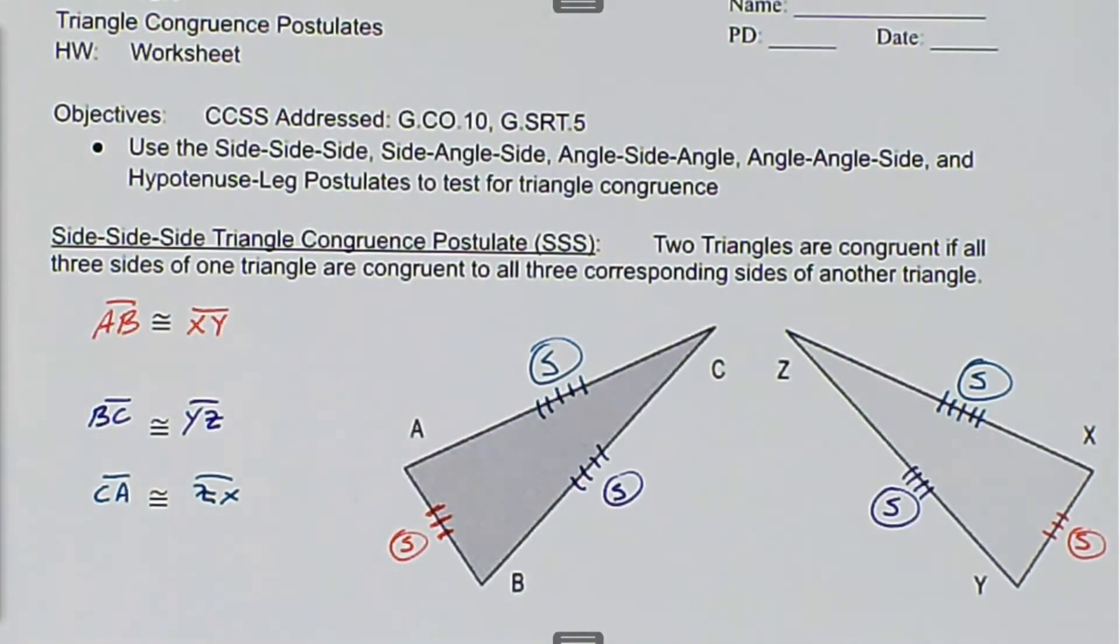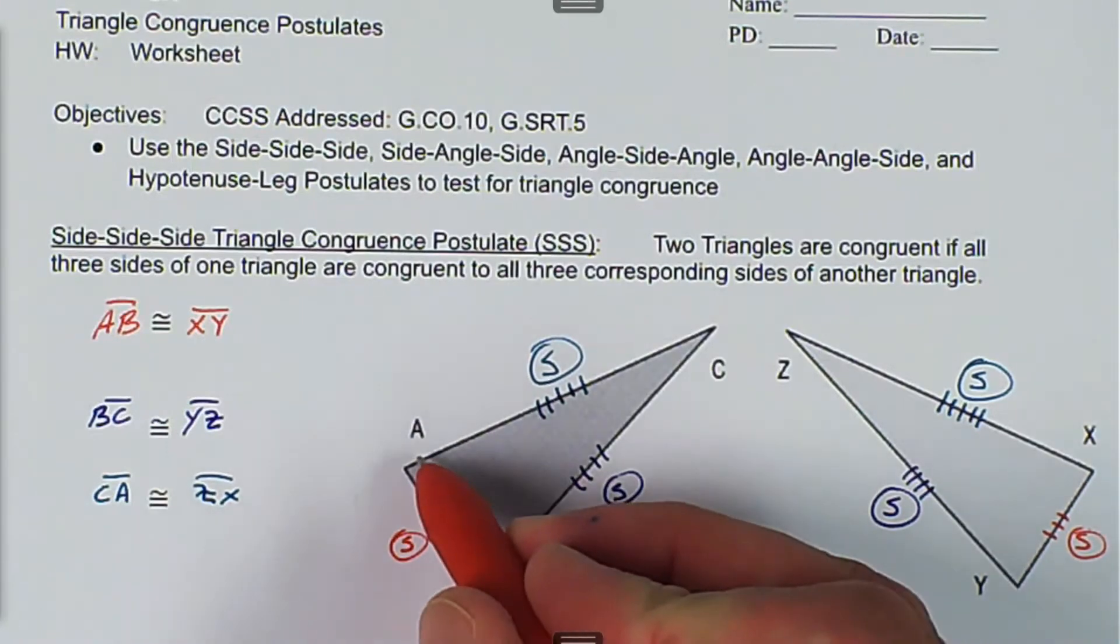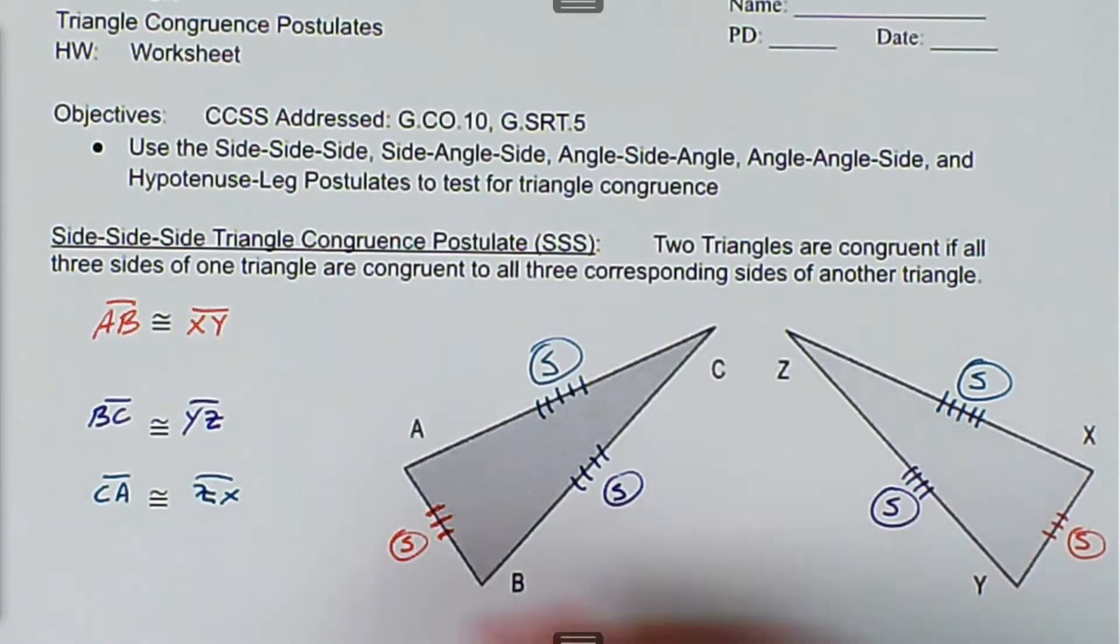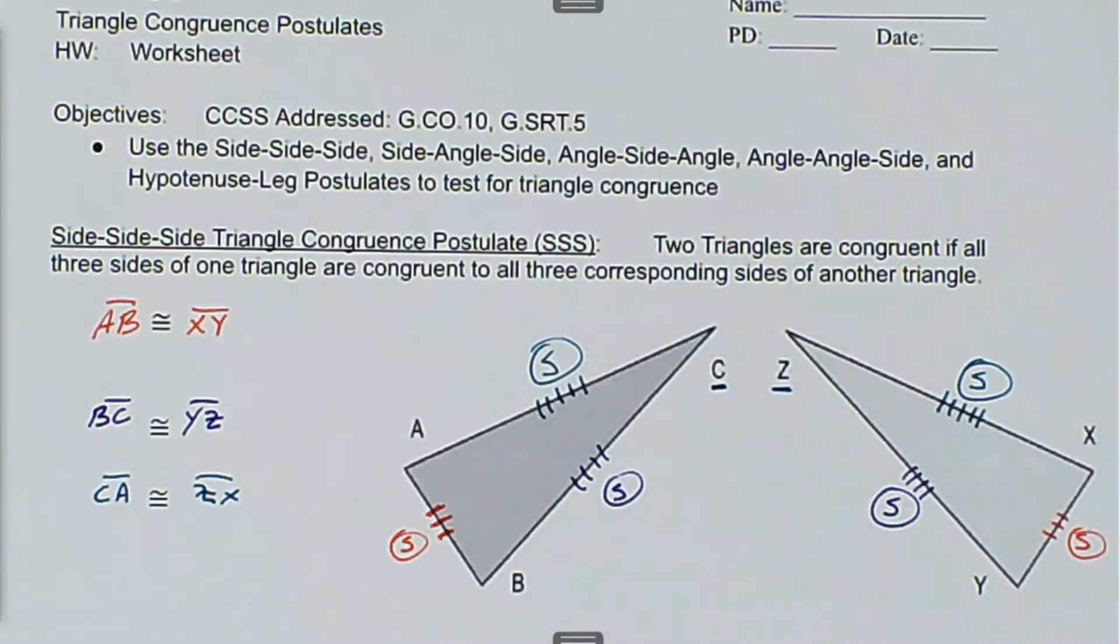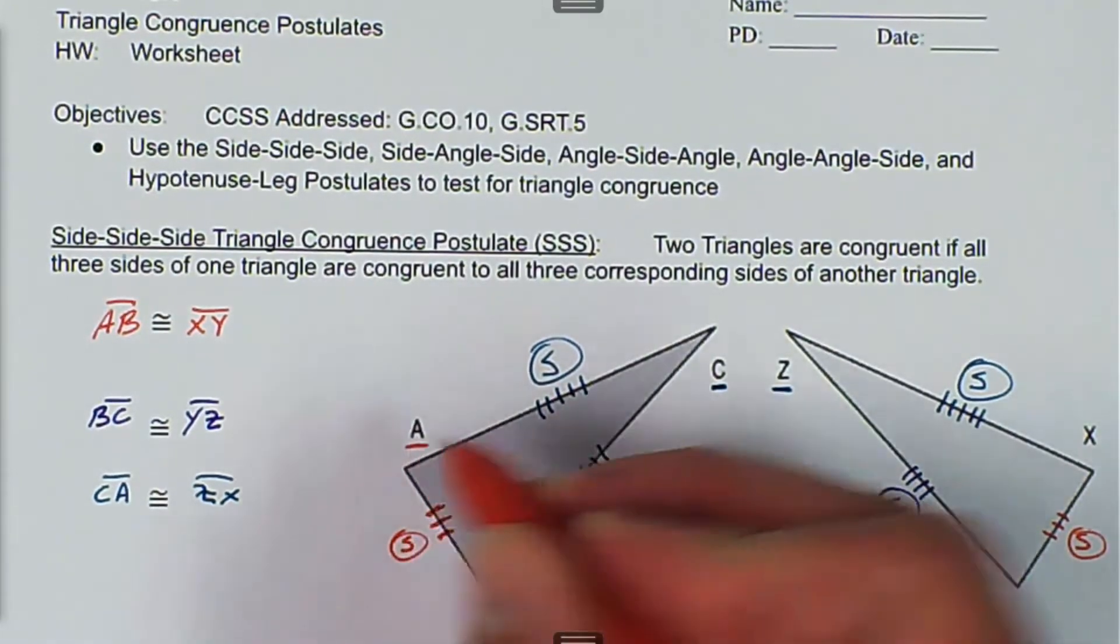We can say that this triangle is congruent. A corresponds with X, B corresponds with Y, and C corresponds with Z. So these triangles are congruent.